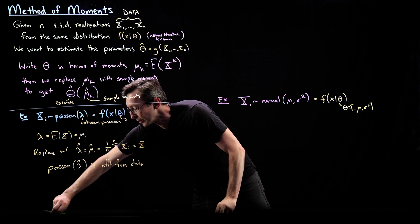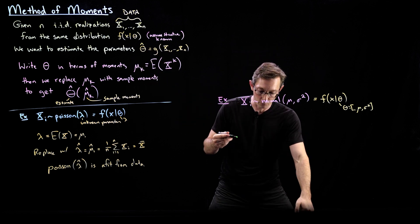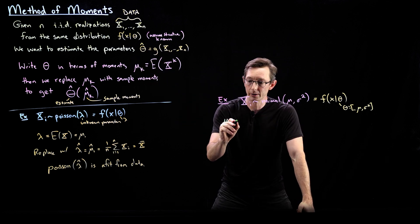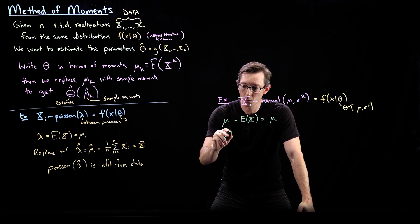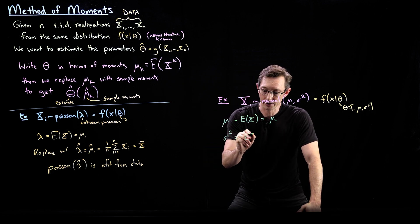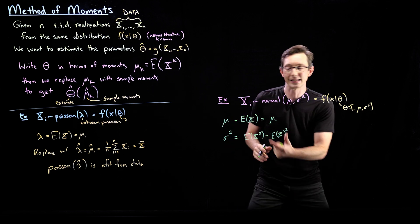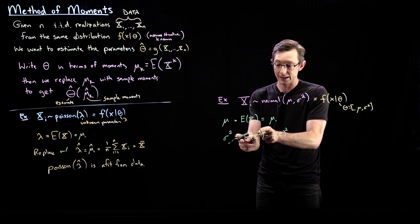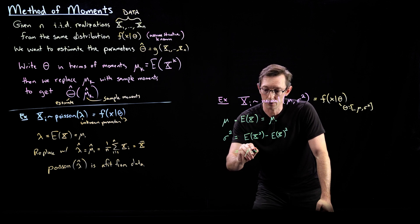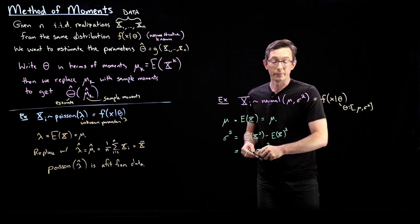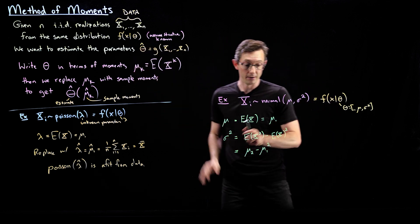We write these two quantities in terms of the moments. We know that mu equals the expected value of x, which is mu_1. And sigma squared equals E[x²] minus (E[x])², which is the definition of variance — that's the second moment mu_2 minus the first moment mu_1 squared. So the parameters are expressed in terms of moments mu_1 and mu_2.